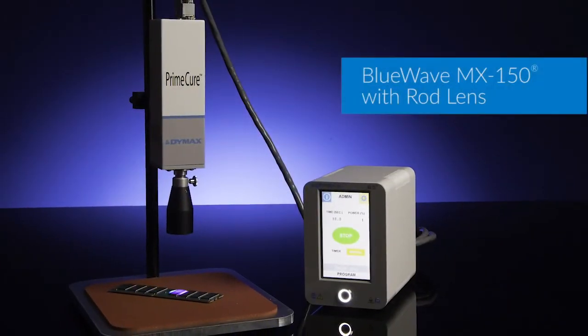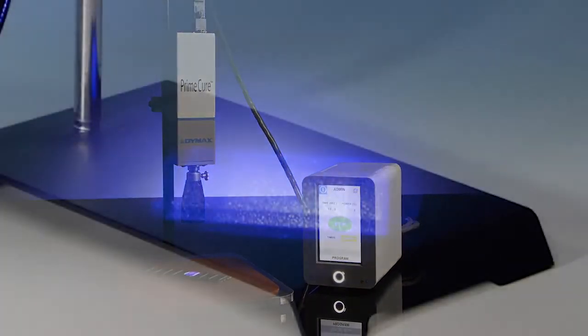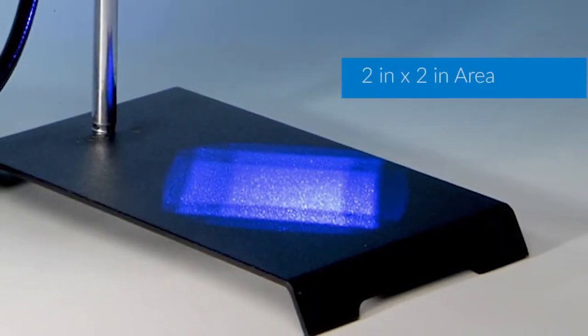A rod lens is available giving the MX150 the capability of being a mini flood with a 2x2 inch area.